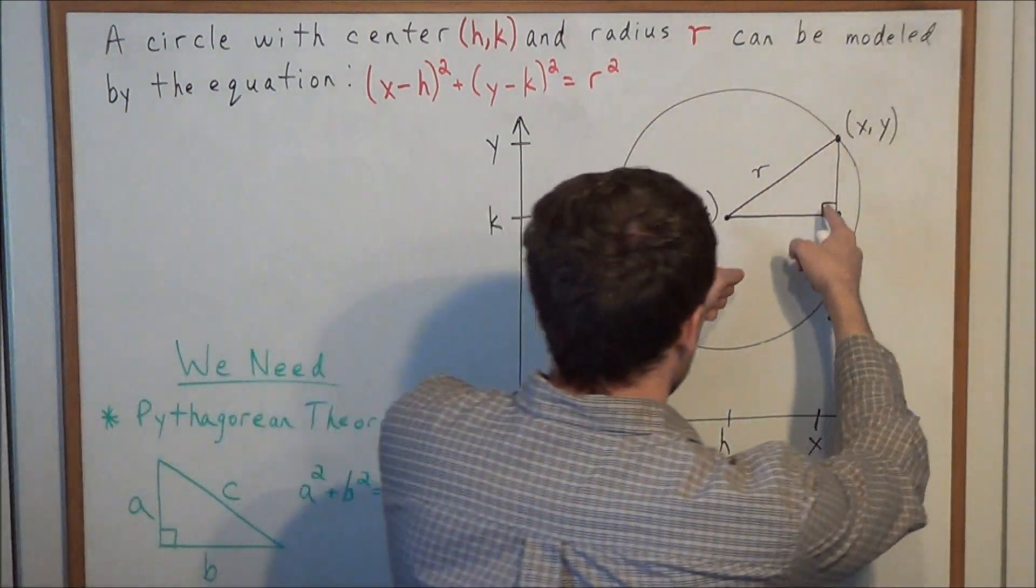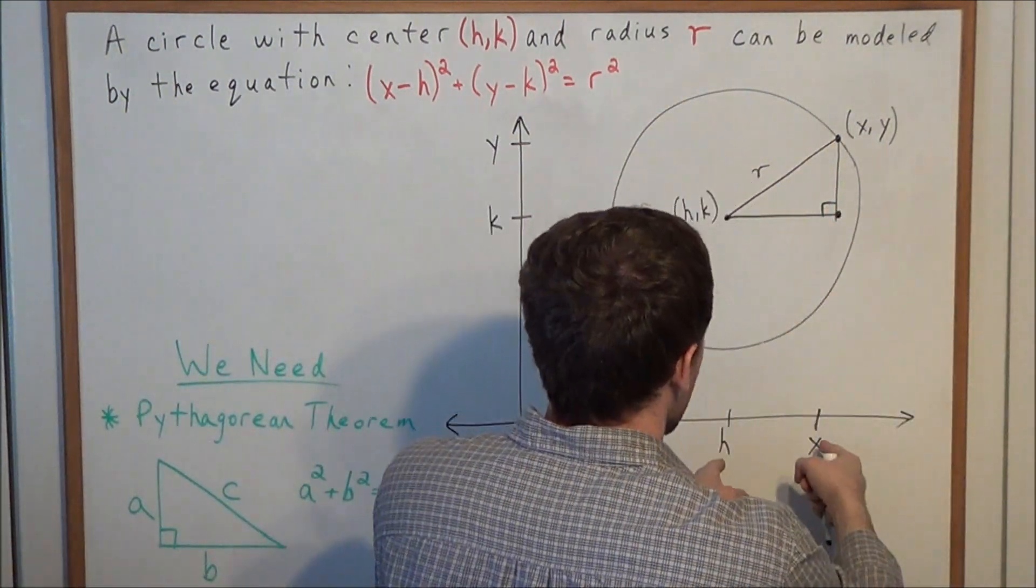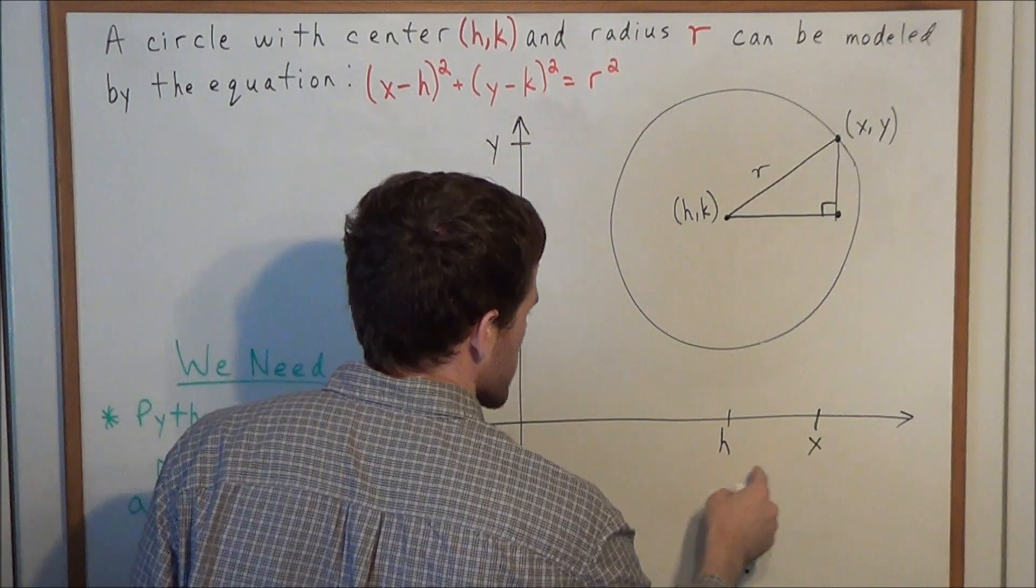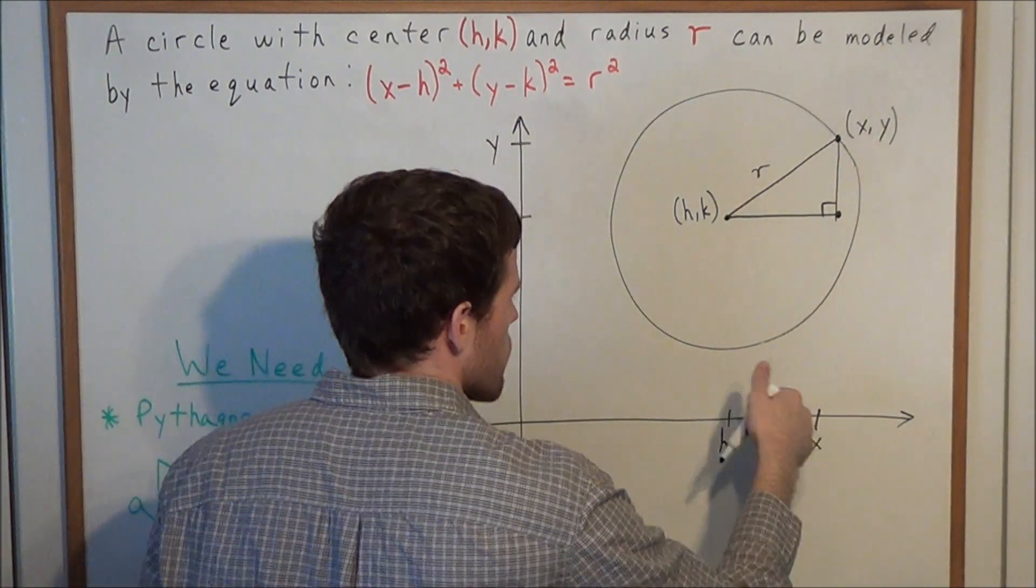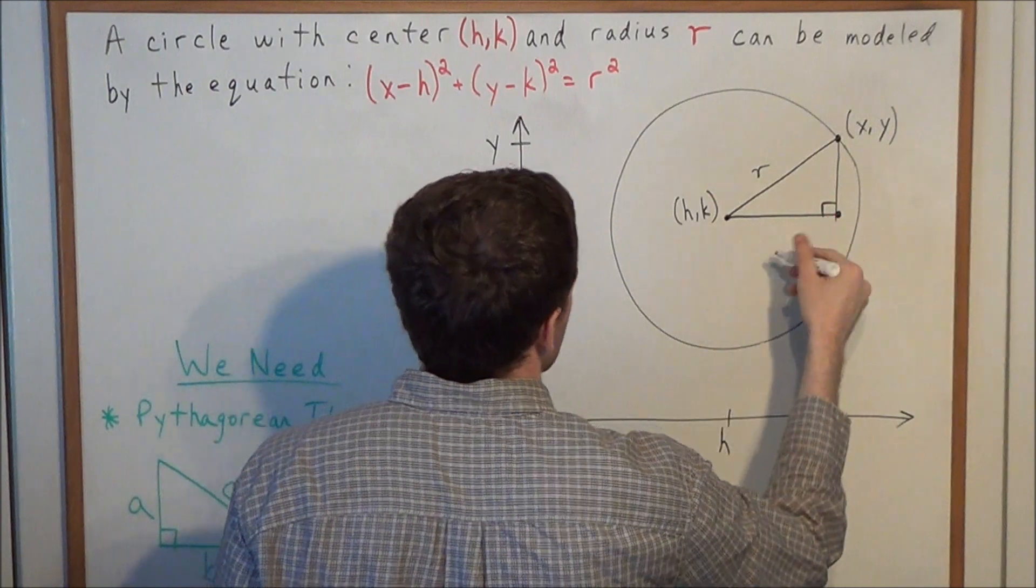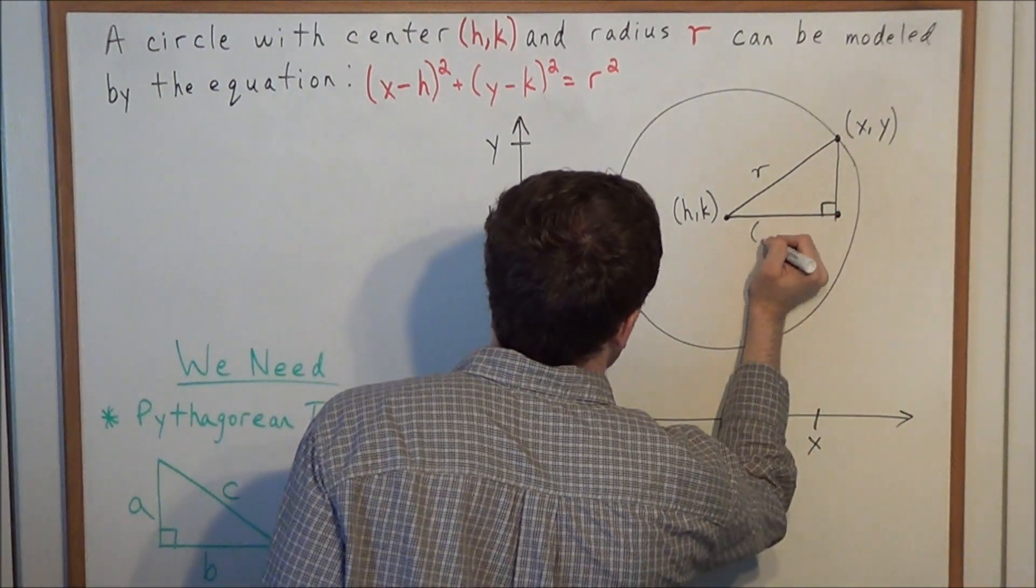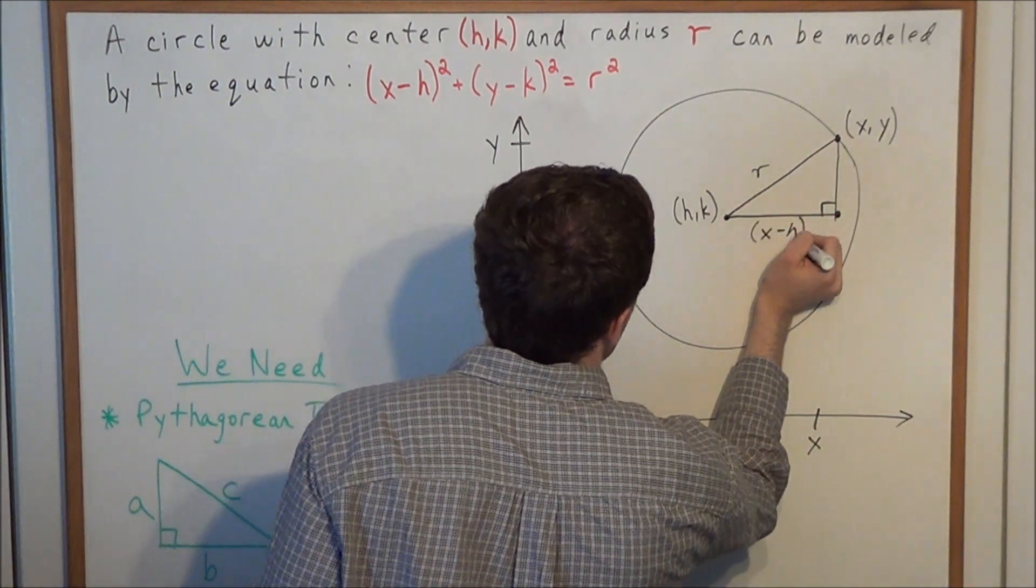If we look at this horizontal leg, the length of this leg is the difference between x and h. This little measurement here represents the length of this horizontal leg. So we could call this leg x minus h.